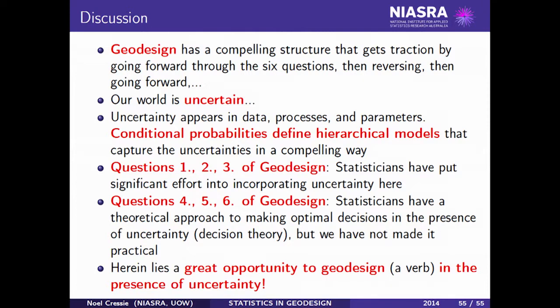The questions I believe we can get to fairly quickly are one, two, and three. We don't do well on that final rung of the knowledge pyramid where we get to make decisions, but we really need to. We have a great opportunity to geodesign — which for me is a verb — in the presence of uncertainty.